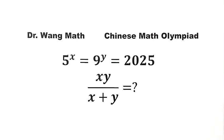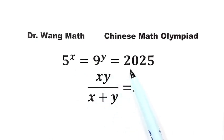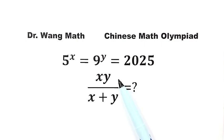In this video, we can solve this problem. Given 5 to the power of x equals 9 to the power y equals 2025, then what is the value of xy over x plus y?